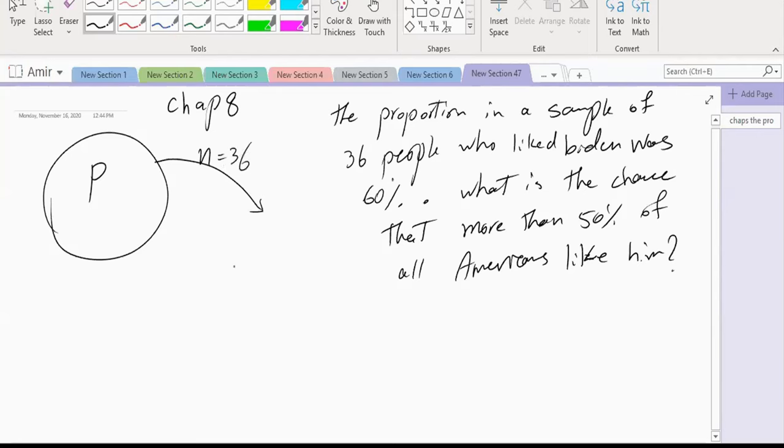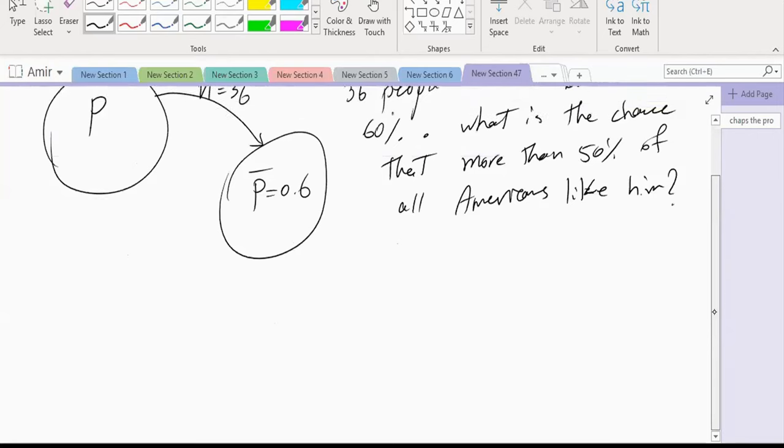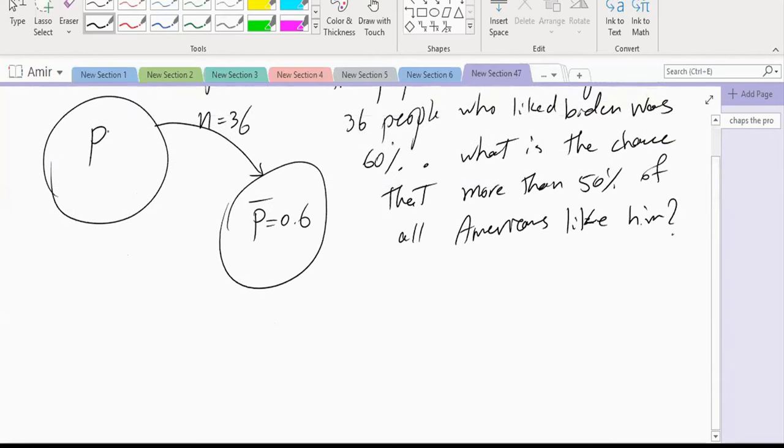Do we know what proportion of the people in the sample liked Biden? Yes, 60%. We don't know the proportion of the population. We know the proportion of the sample, and we want to predict the proportion of the population. In your opinion, what is the proportion in the population that liked Biden? Our best estimate is 60%.